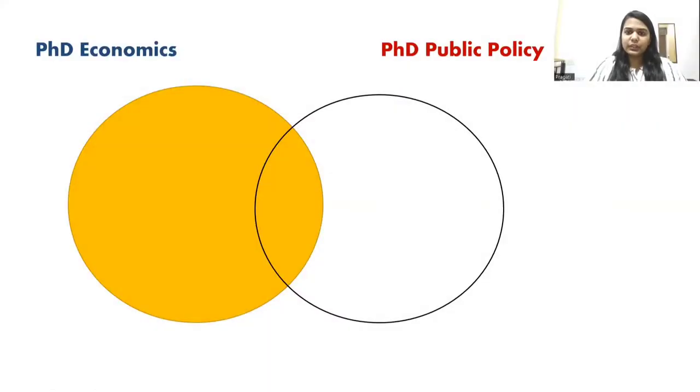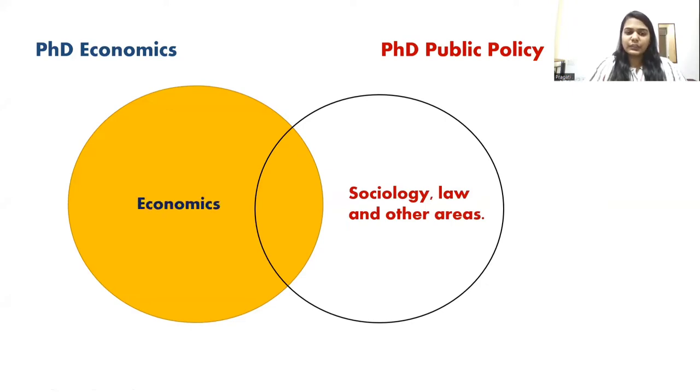A PhD in Economics is purely econ focused and the research involves looking at everything through an angle of economic theories and doing some economic evaluation of every topic they look at, such as education economics, health economics, trade economics, behaviour economics, or environment economics. On the other hand, a PhD in Public Policy is more interdisciplinary and economics forms just one part of it. If I represent this using a Venn diagram, then a PhD in Public Policy will include sociology, law and other areas, while a part of it intersects with economics.